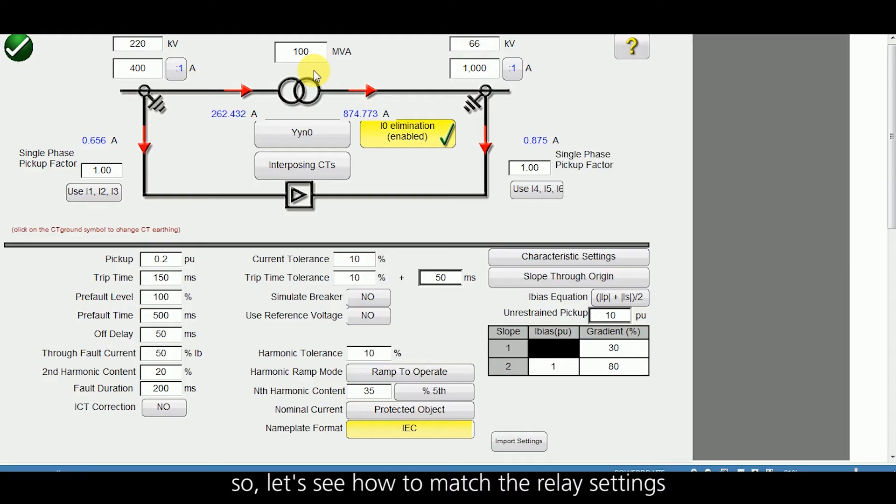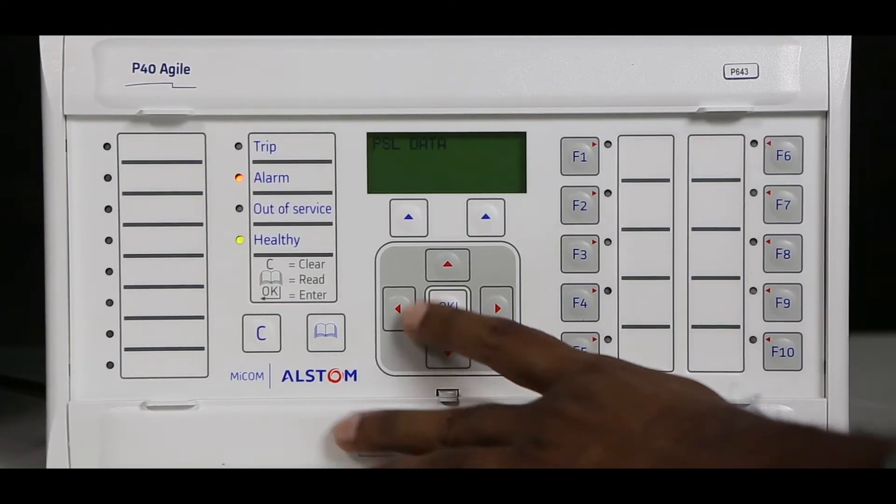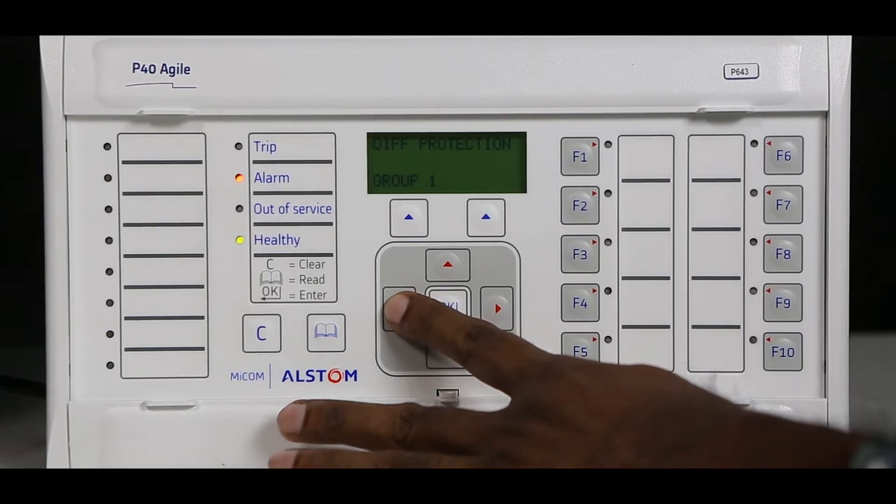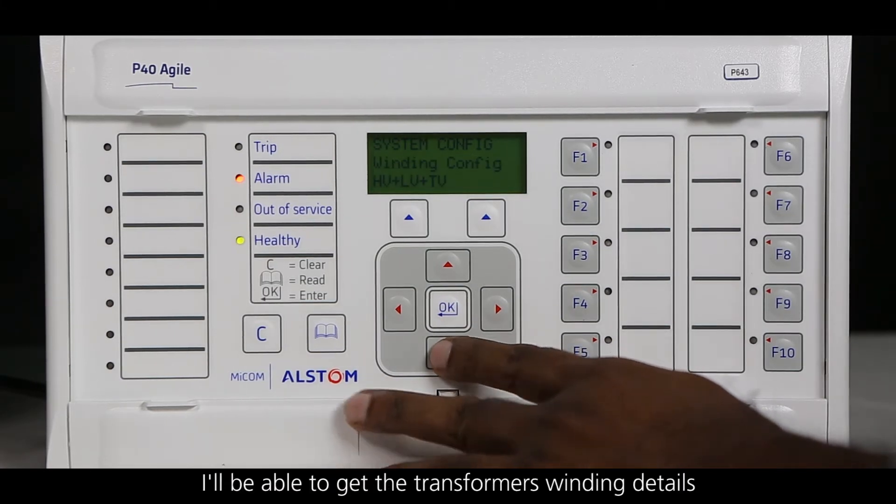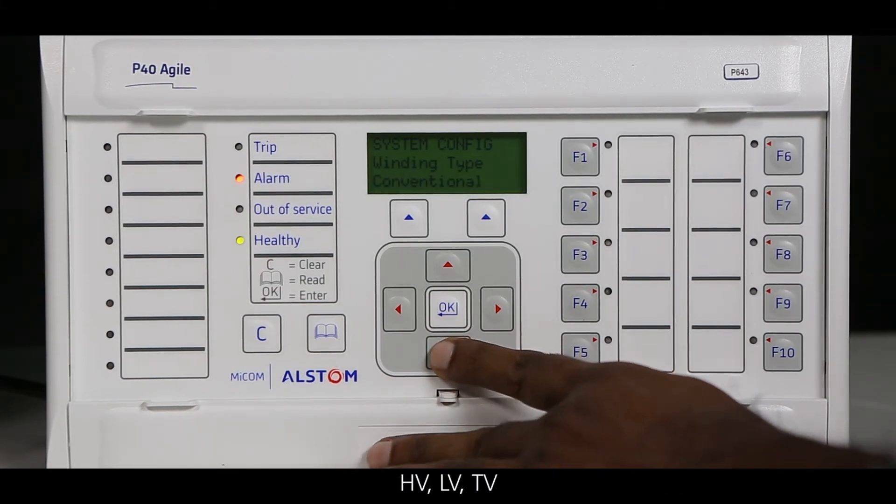Under system configuration I will be able to get the transformer winding details: HV, LV, TV.